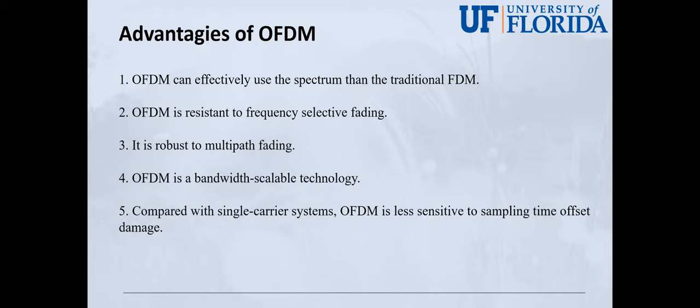OFDM has many advantages. Here I list some of them. The OFDM spectrum consists of overlapping narrow subcarriers, so it can effectively use the spectrum better than the traditional FDM. In OFDM, wideband channels are divided into smaller narrowband subchannels, so it is resistant to frequency selective fading.